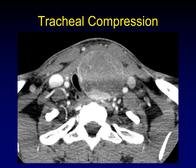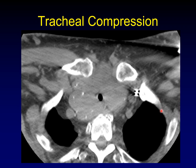Here's what I would consider moderate tracheal compression — we've got more of an oval or saber sheath configuration to the trachea now. There's still plenty of room for air to get in; I wouldn't expect this patient to be dyspneic from this alone, but it's clearly distorted. And once you get down to just clearly reduced diameter, then we start calling that severe tracheal compression.